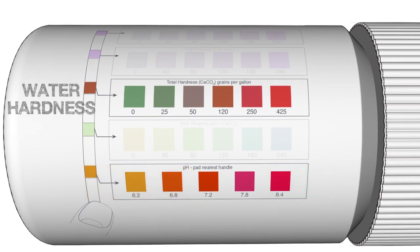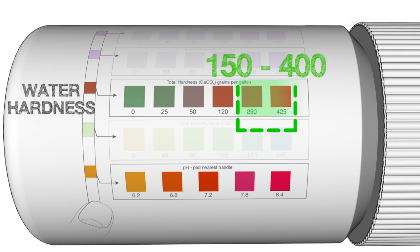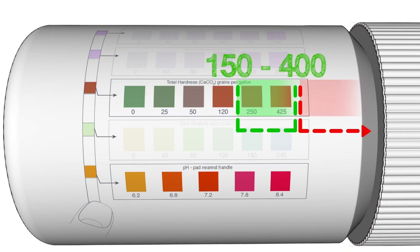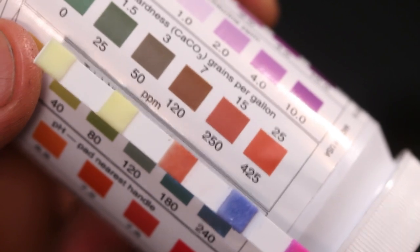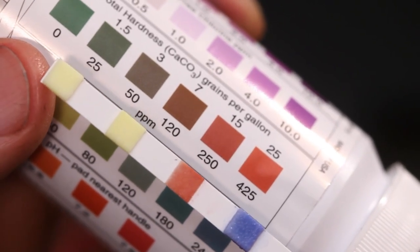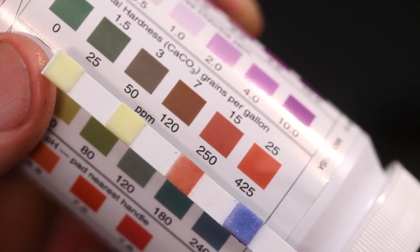A water hardness reading between 150 and 400 parts per million is acceptable for most coolants. Readings above this range also increase the chance of corrosion and bacterial contamination. And separation of the water and concentrate becomes more likely as water hardness becomes excessive.